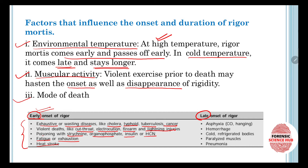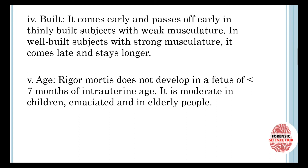Rigor mortis may be late in cases of death due to asphyxia, hemorrhage, cold, or refrigerated bodies. In refrigerated bodies the onset is going to be late. It is also late in paralyzed muscles and in pneumonia.